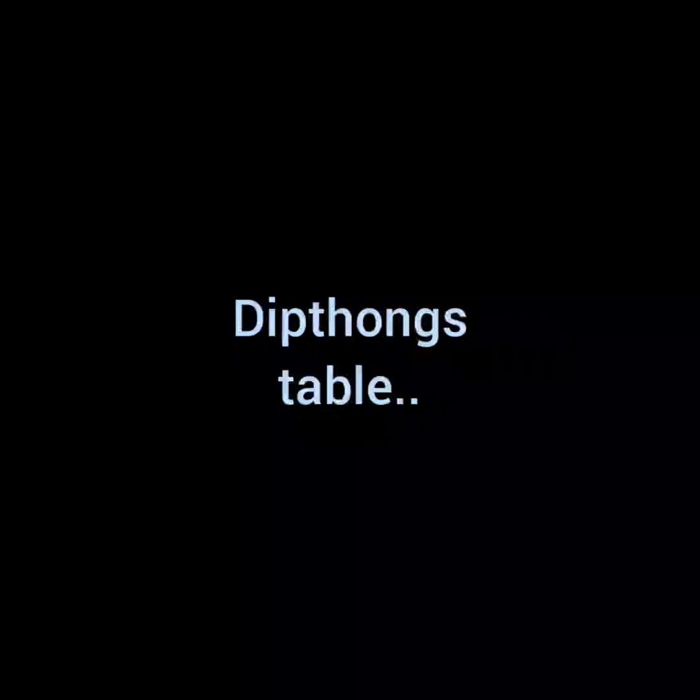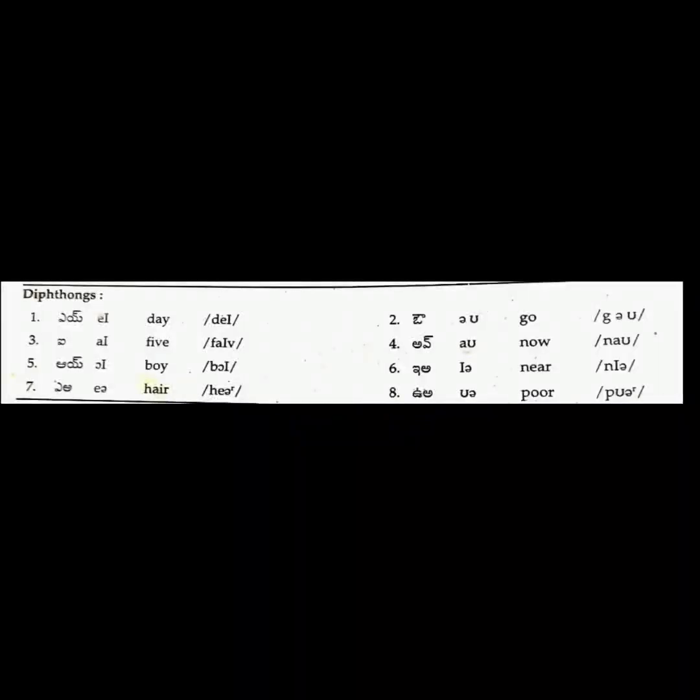Next, diphthongs table. We know diphthongs are a combination of two vowel sounds. Here, you will observe this table. Come to the first one, day. A is pronounced as A. Come to the second one, go. Here, O is pronounced as O.